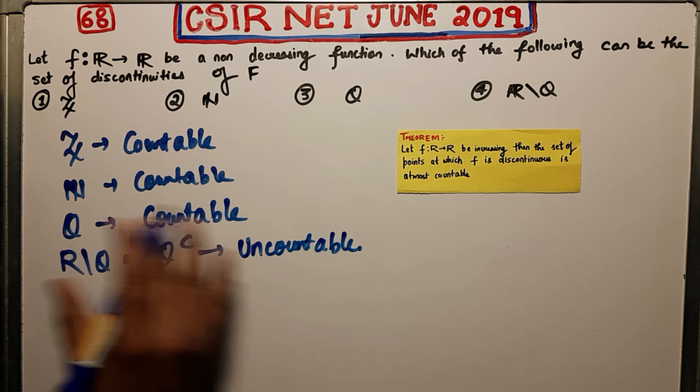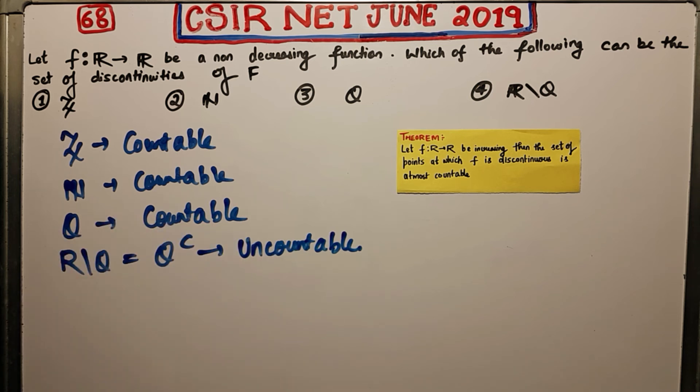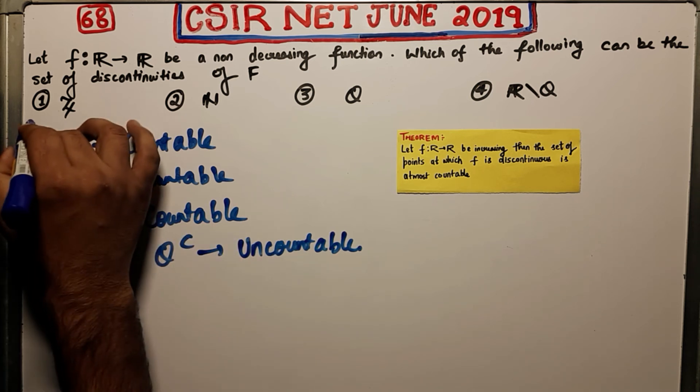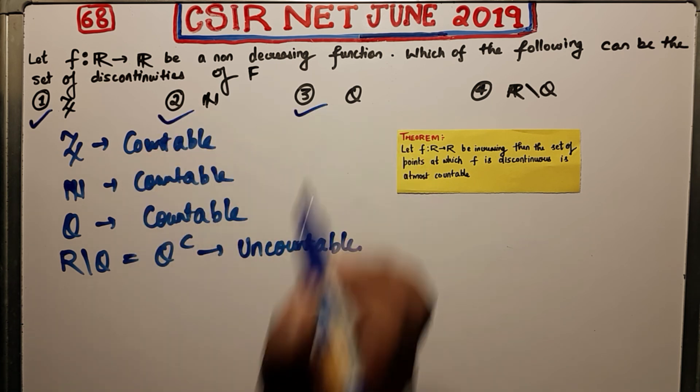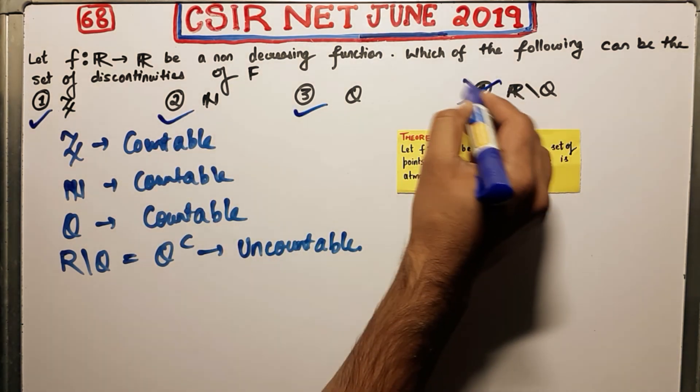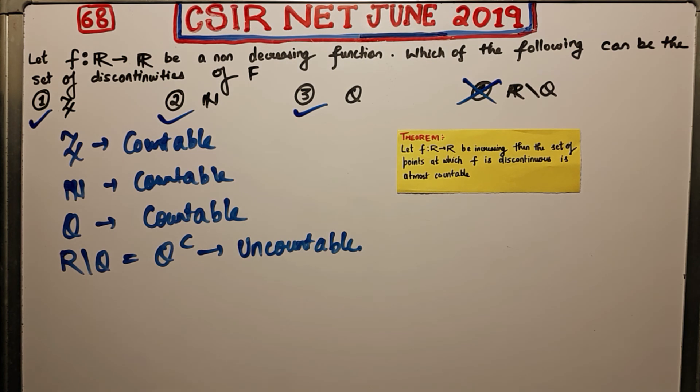So by having the knowledge of this thing, what you can directly tick as your answer: you can tick first, second, third as your answer, and the fourth one is incorrect. So this is very easy question by using this theorem.